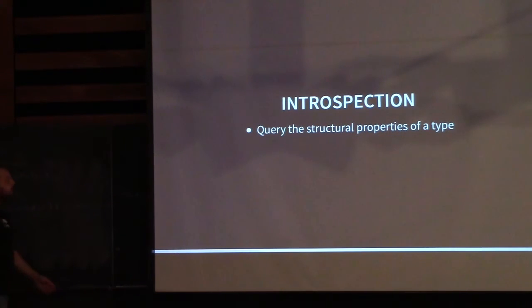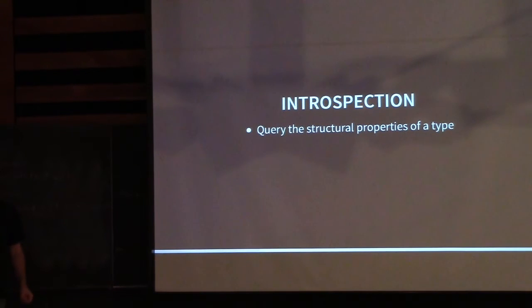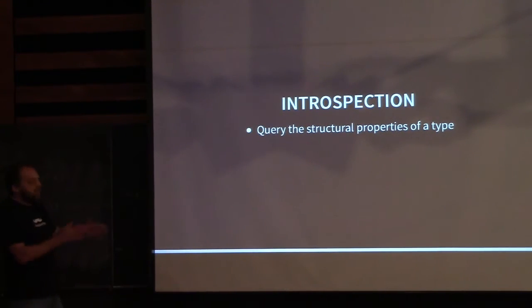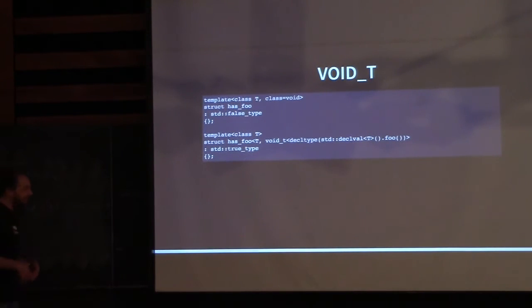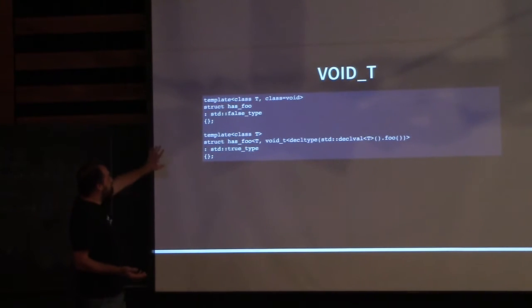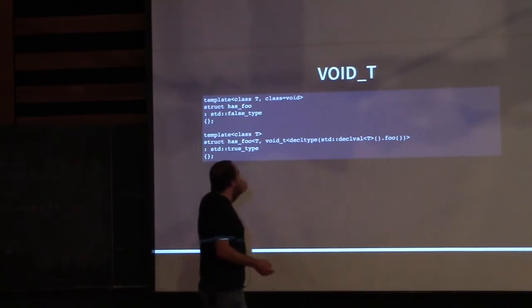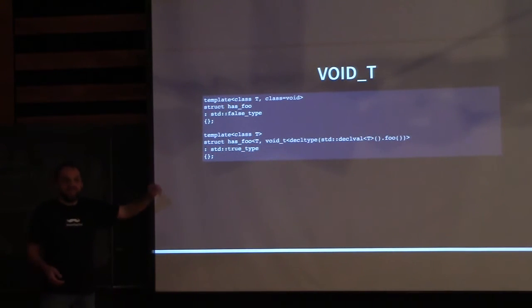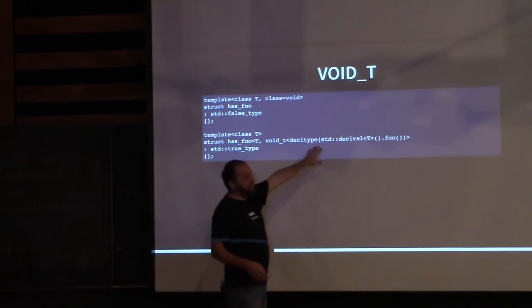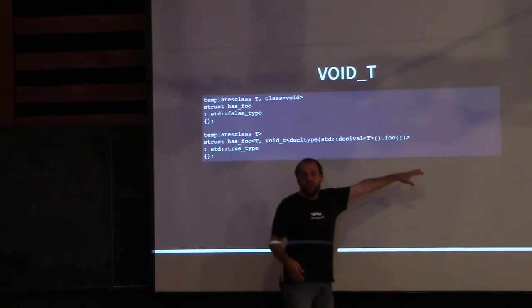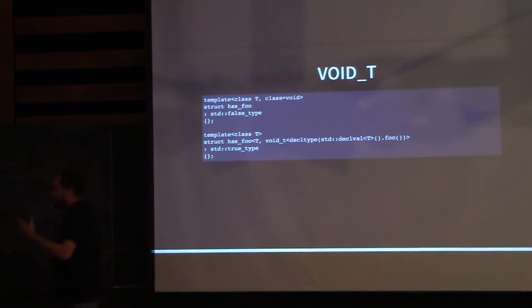Moving on to introspection — not a full reflection framework, but querying the structural properties of a type: does this type implement foo, has a foo member function, does it have this member available? With substitution failure and the void_t pattern, you technically could write something like this — instantiate the class, specialize on it, and use void_t. But I find this ugly, and if it gets more sophisticated — checking whether you can pass a certain member into foo with nested declvals — there's a lot more overhead.